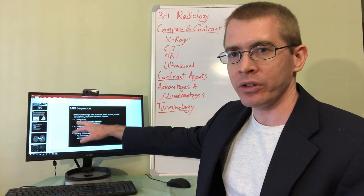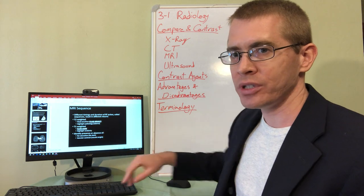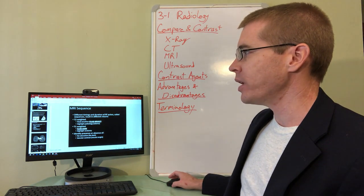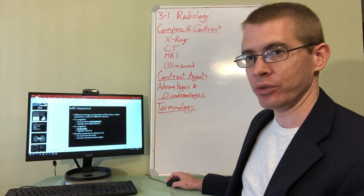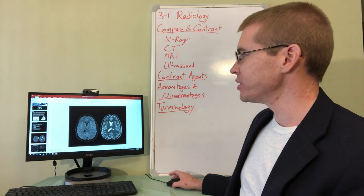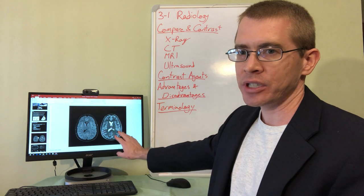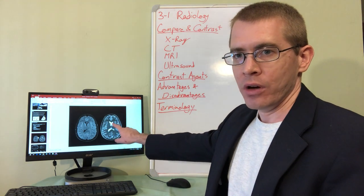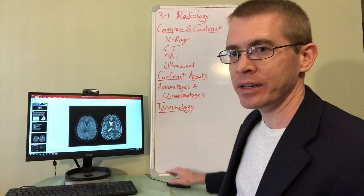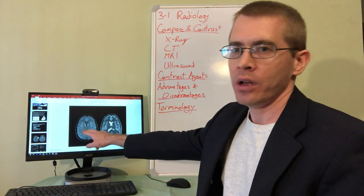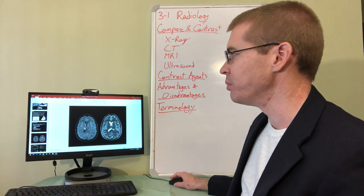There's multiple different timings. The main ones are called T2 and T1. And that allows you to see different types of tissue emphasized. So here's an example of a T1 image on the left and a T2 image on the right. The T2 fluid, water, is particularly highlighted in white. Whereas in the T1, water fluid is black.